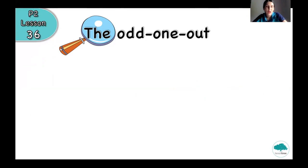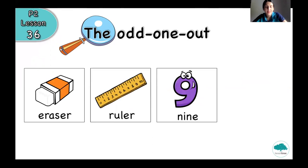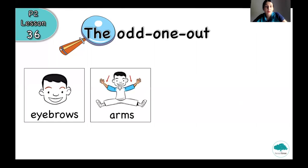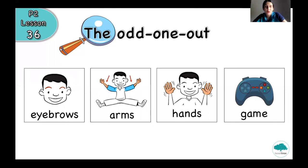We can continue. Let's try one more. We have eraser, ruler, nine, and bag. Can you help me choose the odd one out? It will be nine — great, correct! Nine is a number and the other objects are school things. Continue: we have eyebrows, arms, hands, and game. Let's choose the different picture from the others. Game — that's right! Because game is a toy and eyebrows, arms, and hands are body parts.